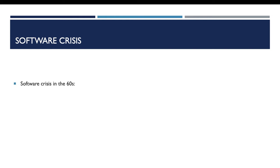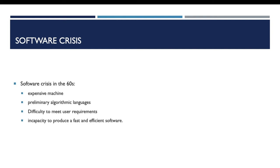In the 60s, the early days of computer science were known as the software crisis. This crisis was characterized by the high cost of machines, the preliminary algorithmic languages, and the difficulty to meet user requirements — the incapacity to produce fast and efficient software.